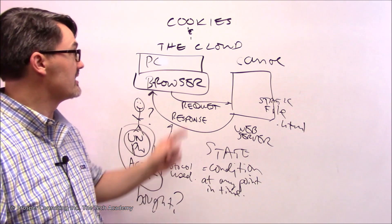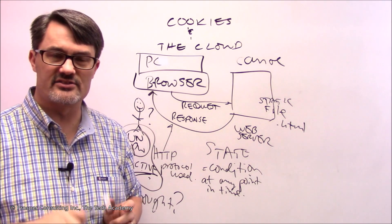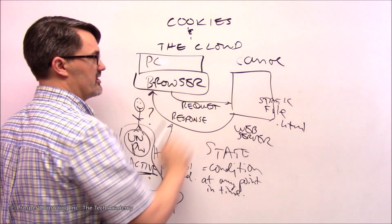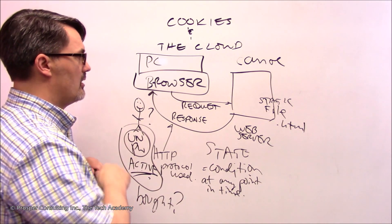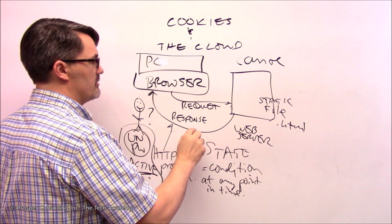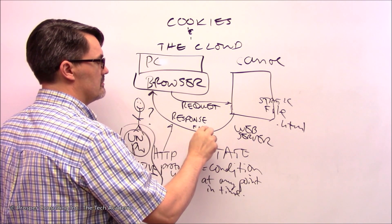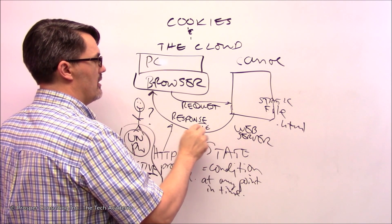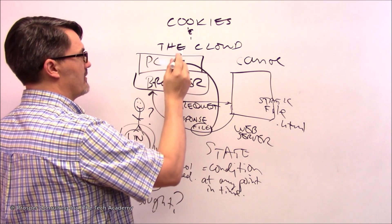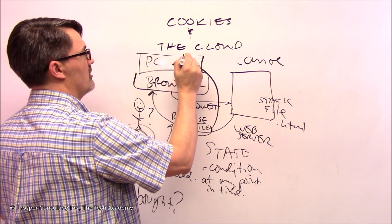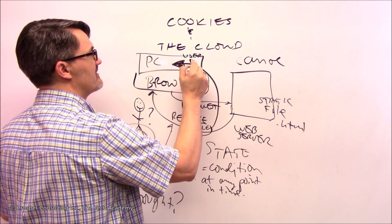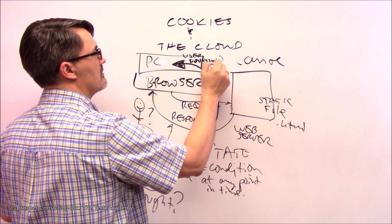There are a few different solutions. One of them is this: What if the first time Bob orders a canoe off your site, along with the response, you send a small file, and this file can get stored on Bob's computer? It records who the user is, the fact that it's Bob, and the fact that he has, in fact, bought something from you.